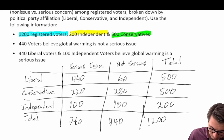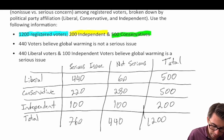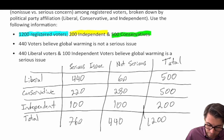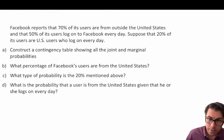Continuing: 760 minus 540 gives us 220 liberals who don't think it's serious, so 500 minus 220 gives us 280 liberals who do. Checking: 440 plus 60 equals 500, 220 plus 280 equals 500, 100 plus 100 equals 200. Column checks: 440 plus 220 equals 660, plus 100 equals 760; 60 plus 280 equals 340, plus 100 equals 440. The contingency table is fully constructed.